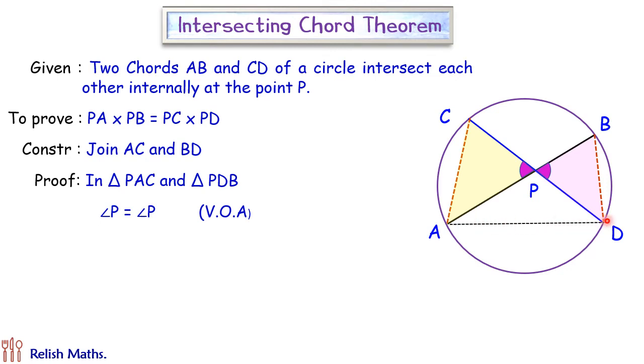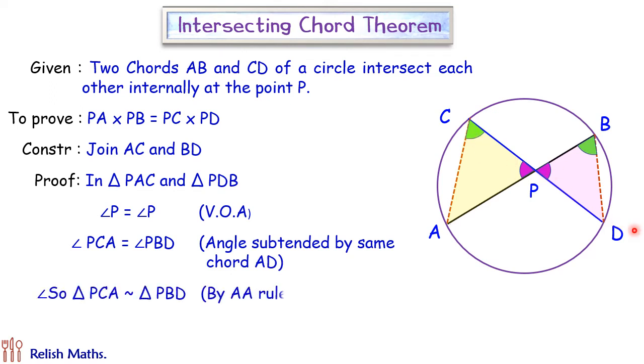We know that in a circle, a chord subtends equal angles on the same side of the segment. That means angle ACD and angle ABD will be equal in magnitude. Thus, by angle-angle similarity, we can say that these two triangles are similar to each other.